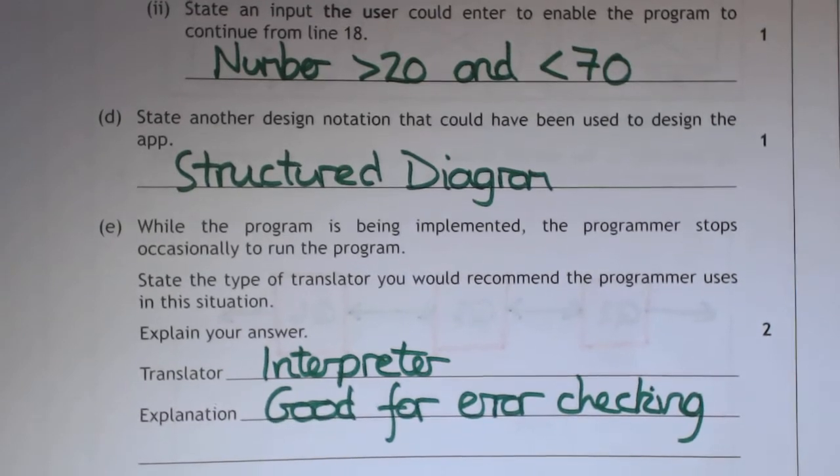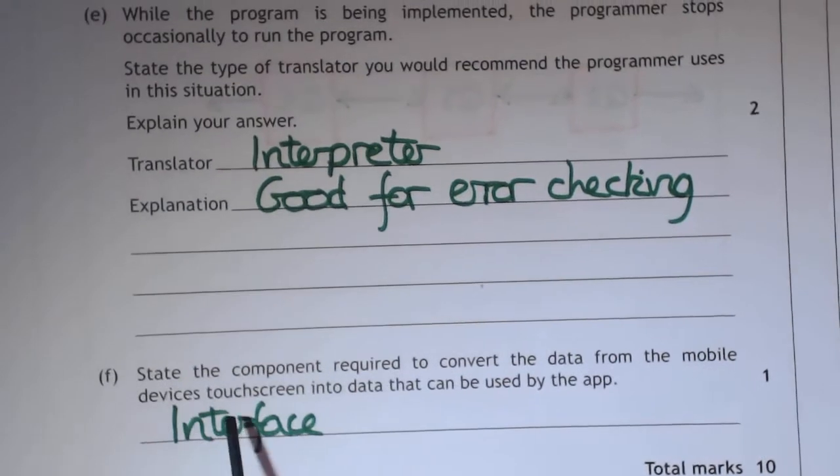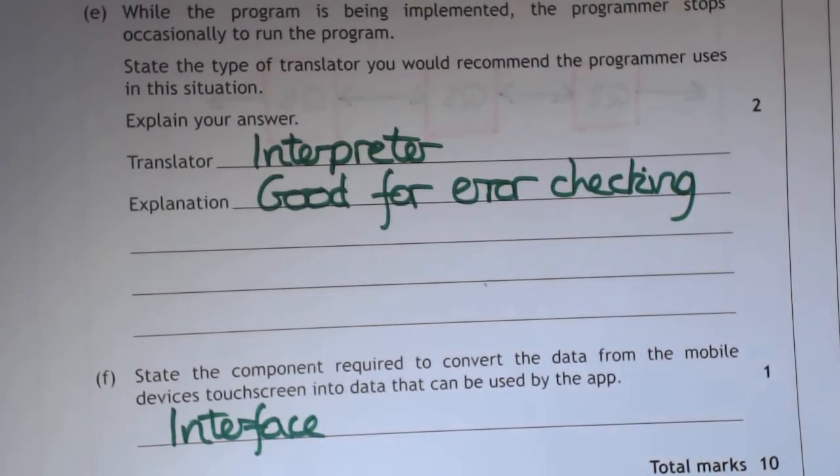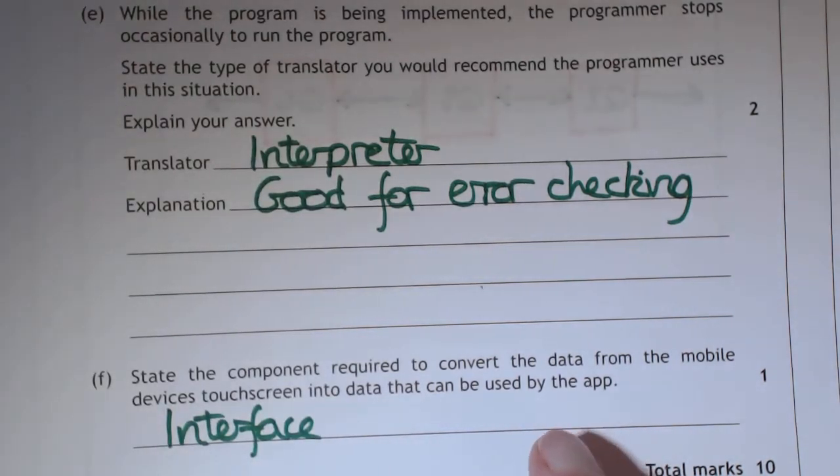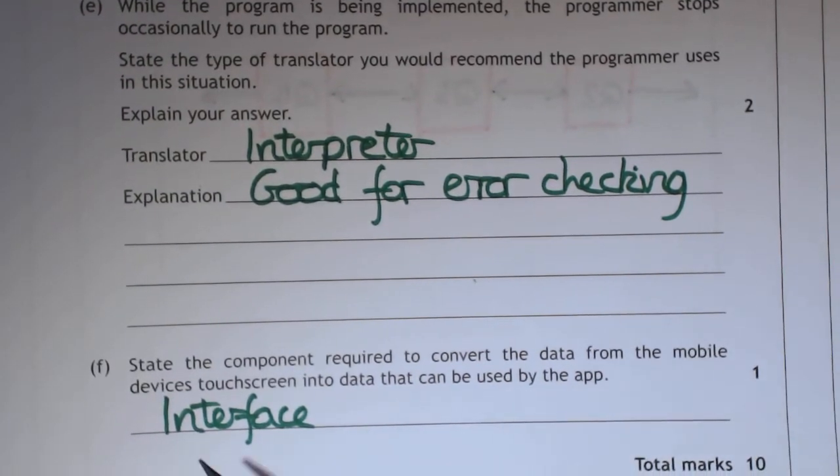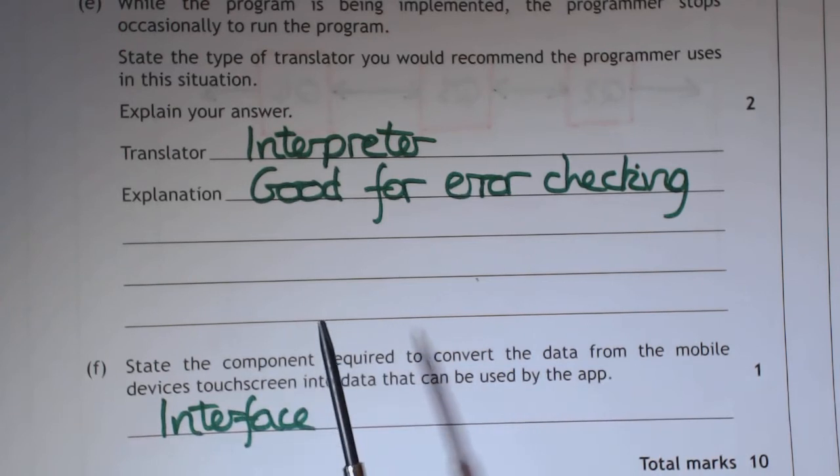Now if you've got any piece of computing equipment and you attach it to another piece of computing equipment, you need something called an interface. So interface is between the two pieces of equipment, it allows them to communicate with each other. So they're asking here, state the component required to convert the data from the mobile touch screen into data that can be used by the app. That's also an interface. So you're touching your touch screen and it's translating your touches into something for the app to understand. That's known as an interface. Quite often that question is asked when it's talking about two pieces of hardware connected together, but it's the same principle, and that is question 18.